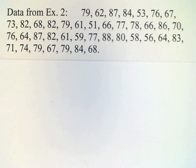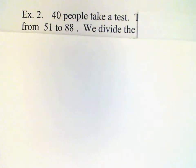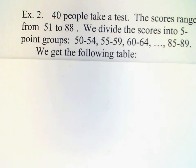So what we will do in this particular example is we're going to divide the scores into five-point groups. So all the scores from 50 to 54 will be in one group, 55 to 59 and the next group, and so on.